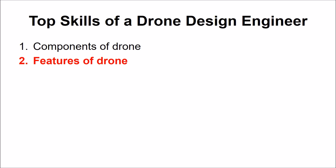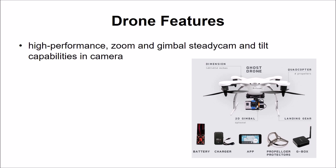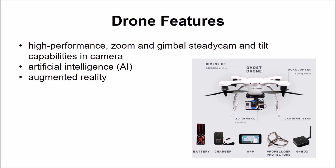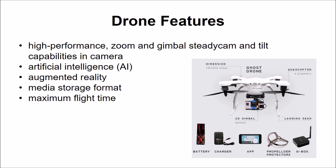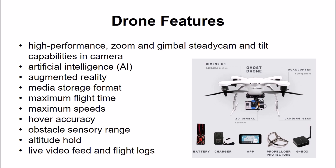Drone features vary and include: various types of cameras with high-performance zoom, gimbal, pan, and tilt capabilities; artificial intelligence that enables the drone to follow objects; augmented reality features that superimpose virtual objects on the drone's camera feed; media storage format; maximum flight time; maximum speed including ascent and descent; hover accuracy; obstacle sensory range; altitude hold, which keeps the drone at a fixed altitude; and live video feed and flight log.